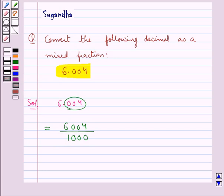Now let's convert this fraction into simplest form. Now 2 times 500 is 1000 and 2 times 3002 is 6004. Then 2 times 250 is 500 and 2 times 1501 is 3002. So this is equal to 1501 upon 250.